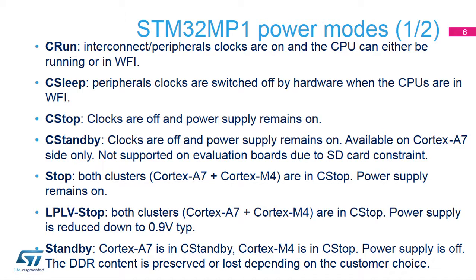In C-Stop mode, the CPU, interconnect, and peripheral clocks are off; VDD-Core is unchanged. This mode is available on both domains. C-Standby is very similar to C-Stop regarding the hardware resource states. The difference between both modes is the way to wake up. Note that C-Standby is available on the Cortex-A7 side only. The platform modes are the combination of the cluster modes described above. When both clusters are in C-Stop mode, the platform reaches Stop mode. The PLLs are disabled and VDD-Core is unchanged.